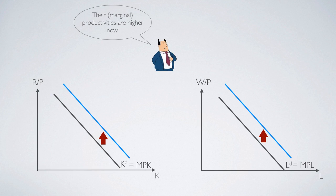Here, productivity actually refers to the marginal productivity of both inputs. Remember, KD and LD — both demand curves represent marginal productivity. So don't forget that. Whenever these two curves move, it is always about the marginal productivity of the input having increased.